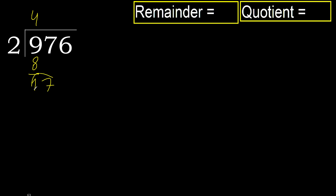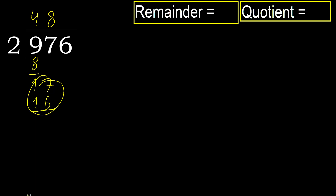Next, 17. 2 multiplied by 9 is 18 — 18 is greater. Multiplied by 8 is 16, it is not greater. Subtract: 17 minus 16 is 1.